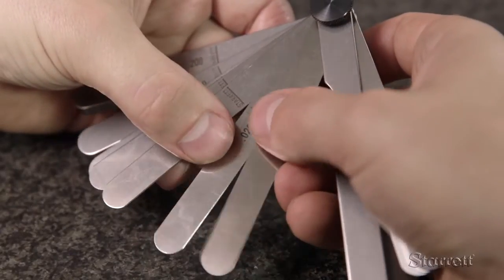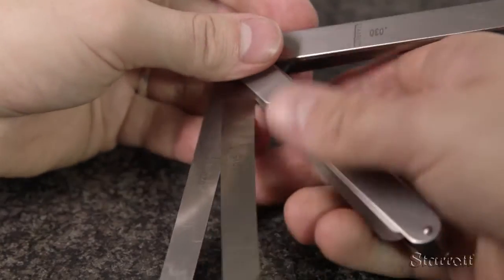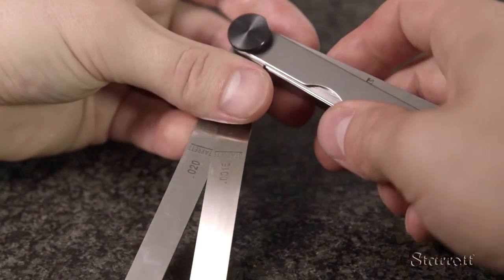For a 0.0215 size, you'll need two blades, the 0.02 and the 0.0015.